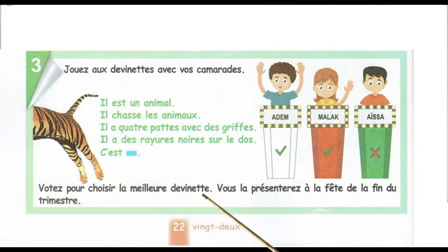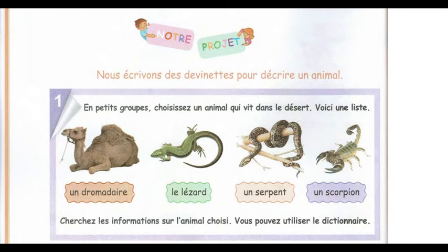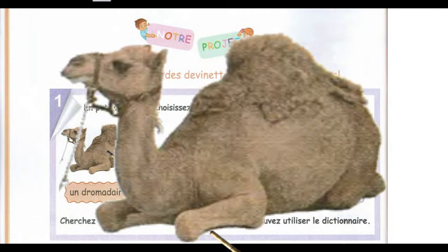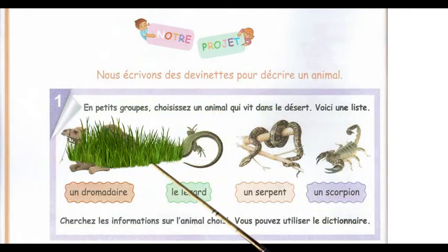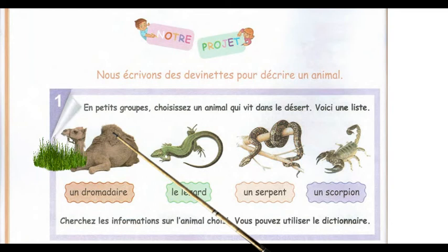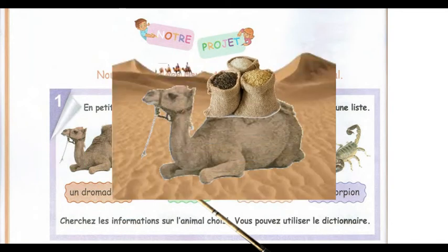Vous la présenterez à la fête de la fin du trimestre. Je donne des informations sur l'animal choisi. Yessine a choisi le dromadaire. Le dromadaire possède une seule bosse. Il est herbivore. Il habite le désert. Il transporte des marchandises.